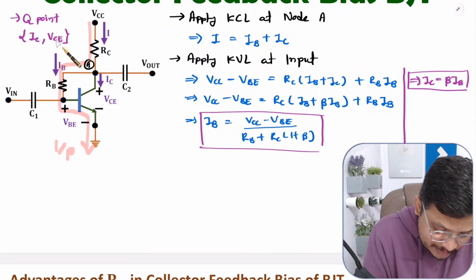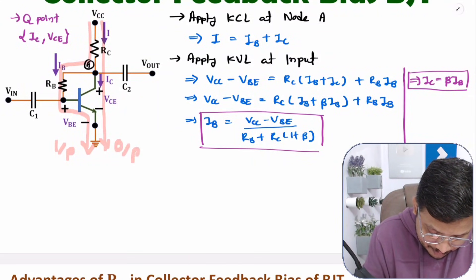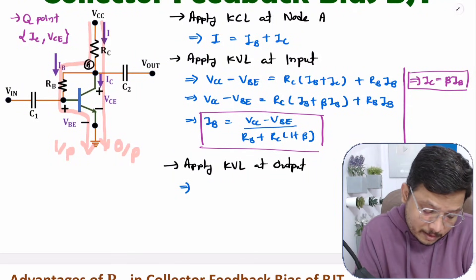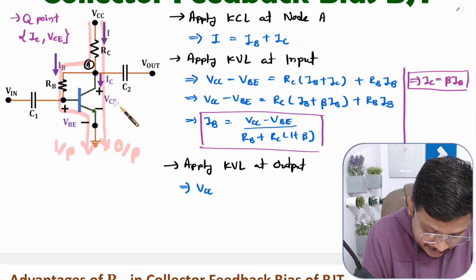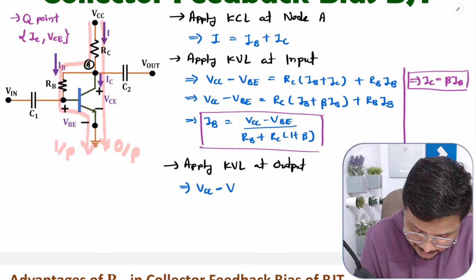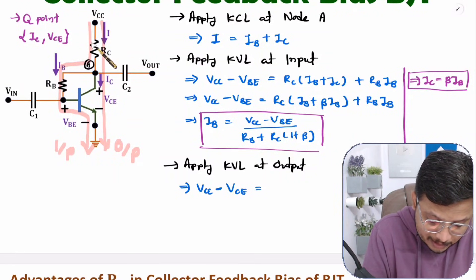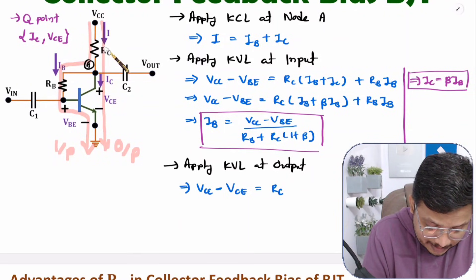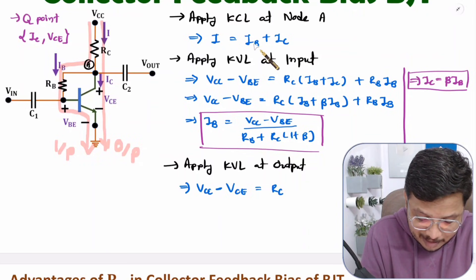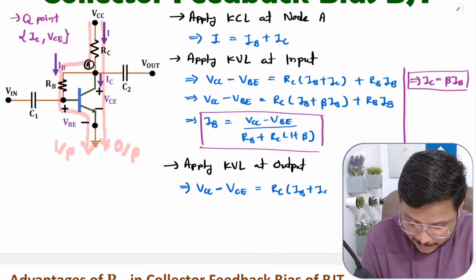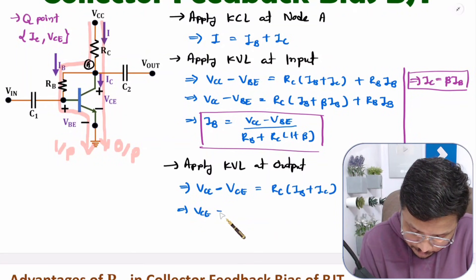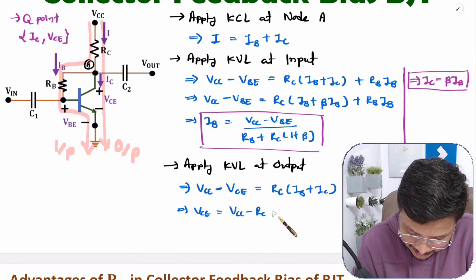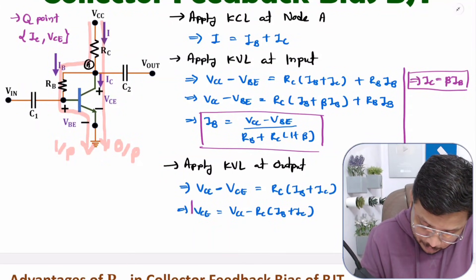Now let us derive the output voltage equation by applying KVL at the output side. In the output loop, VCC minus VCE equals the voltage drop across RC times I, where I = IB + IC. Rearranging, VCE = VCC − RC(IB + IC). That is the output voltage equation.